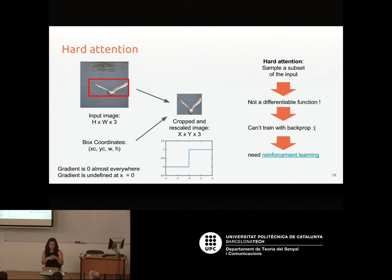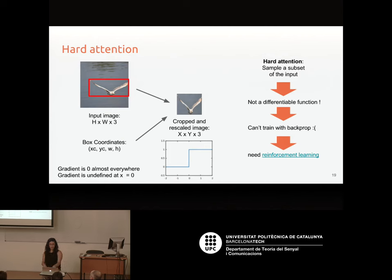That's why there's another type called hard attention. Here you're not predicting weights over the entire input — instead you focus on just a part, basically cropping the input. The problem is this is not a differentiable function — it behaves like a step function where you select some inputs and not others, the gradient is zero almost everywhere, and at the threshold it's not defined. So you cannot train it with gradient descent; you need to use reinforcement learning. There's a nice blog post by Karpathy that explains it, but I won't cover this.